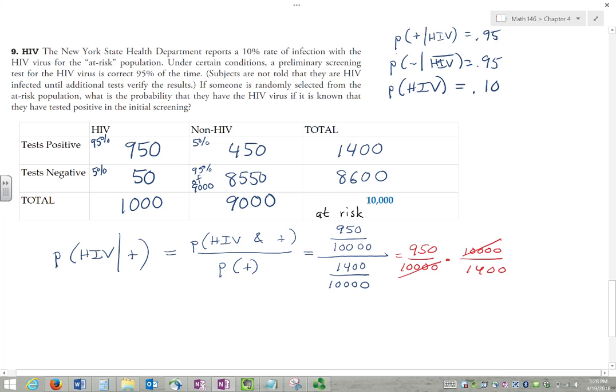There you go, 950 out of 1,400, so that gives us 0.678.